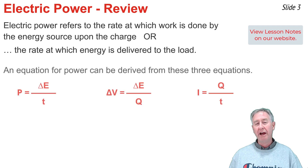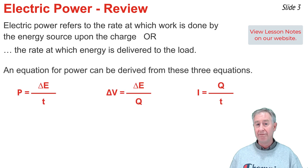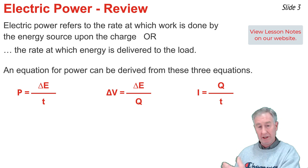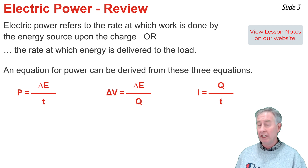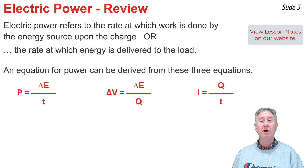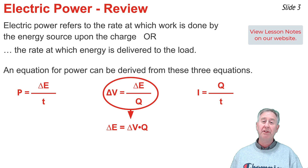We can easily derive an equation for electric power from the mathematical definitions of power, electric potential difference, and current. I'm going to begin by taking the middle equation and writing an expression for delta E — that is, delta E equal delta V times Q.